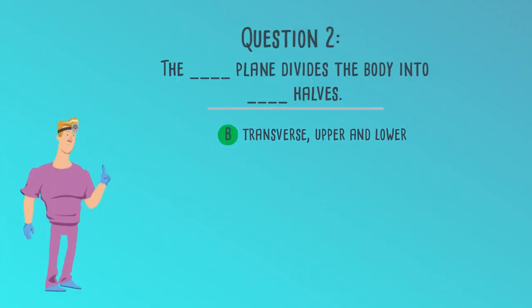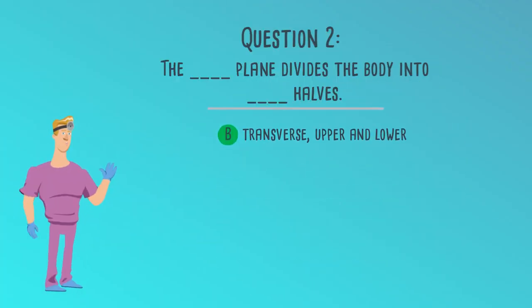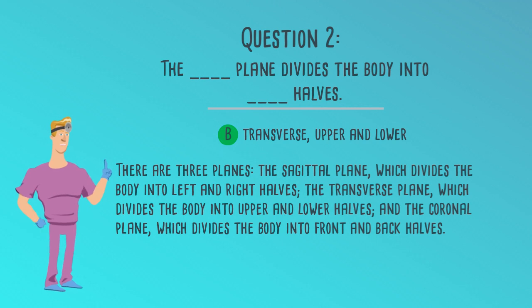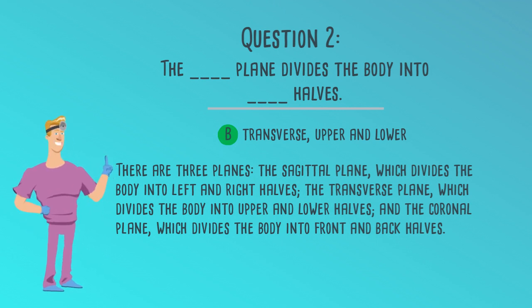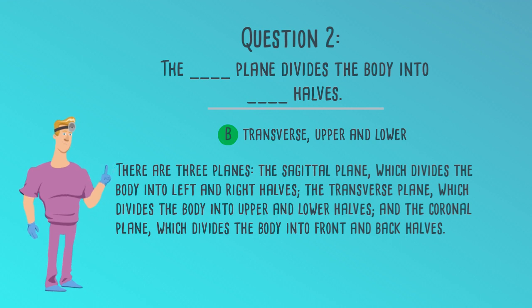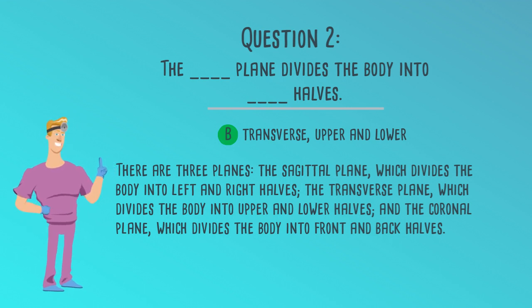The correct answer is B. Transverse, upper and lower. There are three planes: the sagittal plane, which divides the body into left and right halves; the transverse plane, which divides the body into upper and lower halves; and the coronal plane, which divides the body into front and back halves.